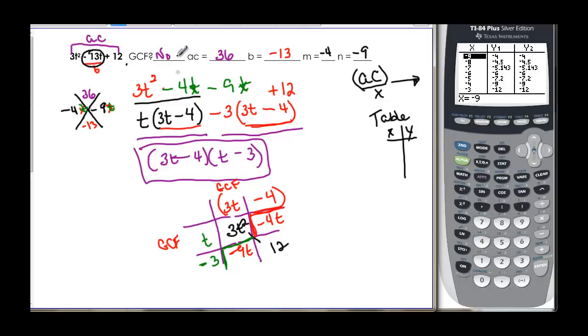Remember we've got to double check. Does negative 3 times negative 4 equal negative 12? And yes, it does. So again, that 3t minus 4 was one factor. And then up and down we had t minus 3. Same factors, just a second way to do it.